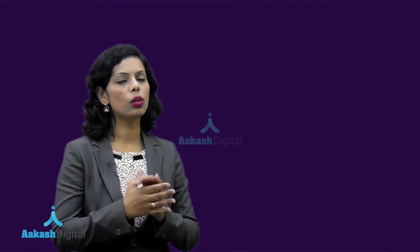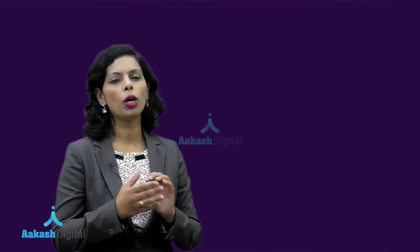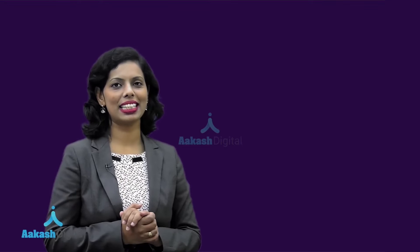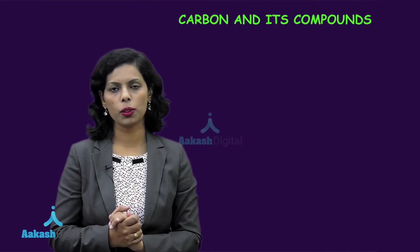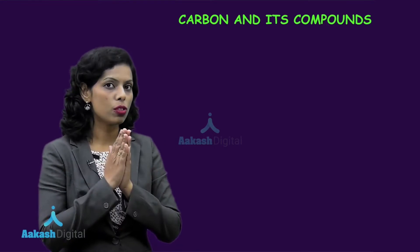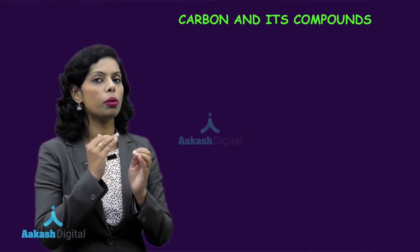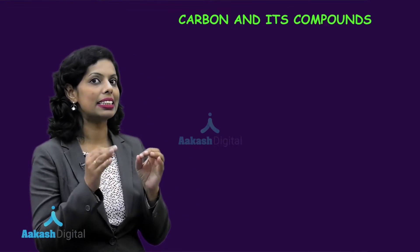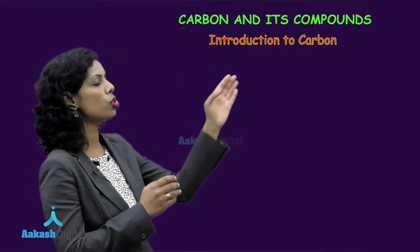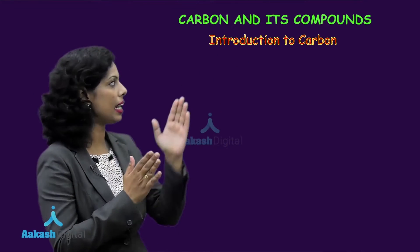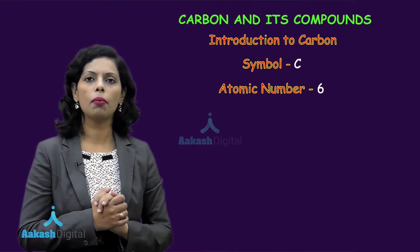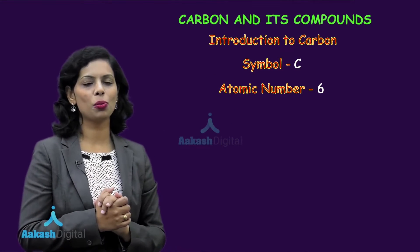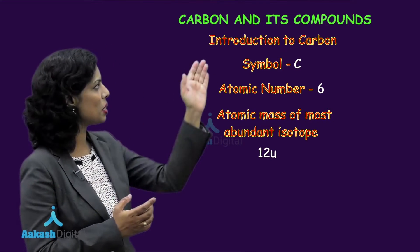Now, let us have a quick look at the important points that we discussed during this lecture. This is the lecture in which we started the chapter carbon and its compounds. I have told you about the important element carbon — it has the symbol C, its atomic number is 6, and the most abundant isotope of carbon has the atomic mass 12.